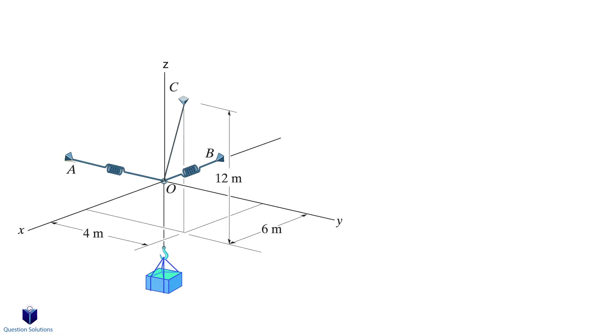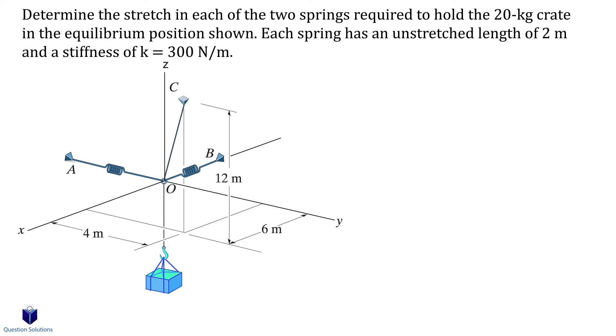Let's take a look at one last example involving springs. In this question we need to find the stretch of the two springs in order to hold the 20 kilogram crate in equilibrium. So the way to solve it is pretty much the same as before where we need to express each force in Cartesian form. If we look at the two springs, spring OA lies on the negative y-axis and spring OB lies in the negative x-axis. That means spring OA will only have a j component while spring OB will have an i component.